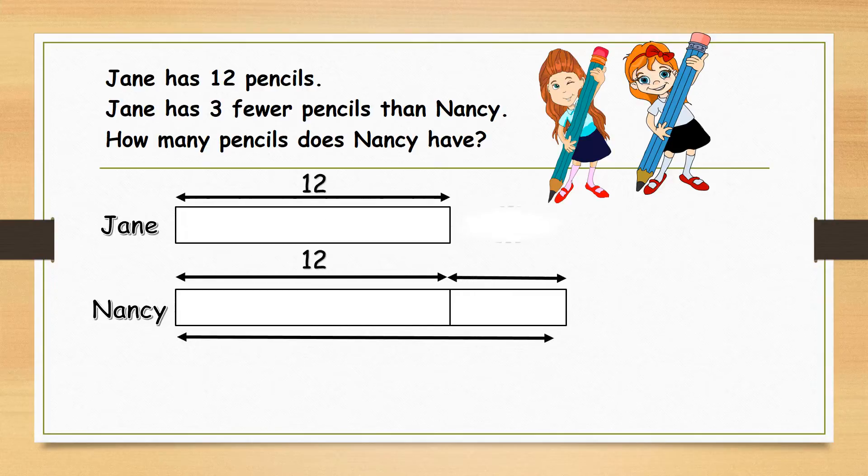From the model, you can see that Jane has 3 less pencils as compared to Nancy. So Nancy has 3 more pencils.